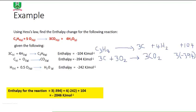In equation number three, we can see the water is on the right-hand side. Now, where does it fall in relation to the desired equation? It also appears on the right-hand side. That means we will maintain the order of equation number three as is — it will not be reversed. So we rewrite it: H2 hydrogen gas reacting with 0.5 moles of oxygen gas to form H2O.